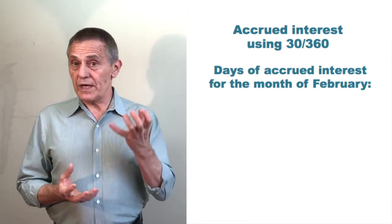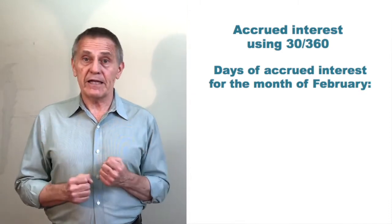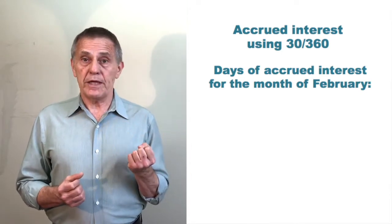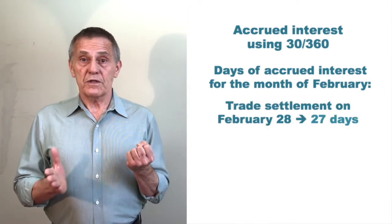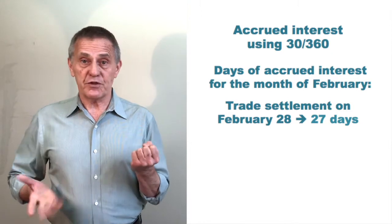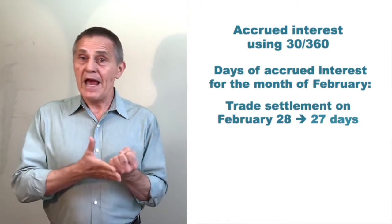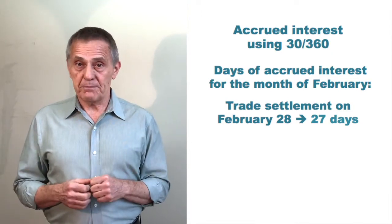So think about the number of days of accrued interest one would earn for the month of February depending upon the settlement date. Let's first assume the trade settles on, this is in a non-leap year, the trade settles on the 28th of the month. Well, of course, the seller would get 27 days of accrued interest for the month of February, every day up to but not including the settlement date.